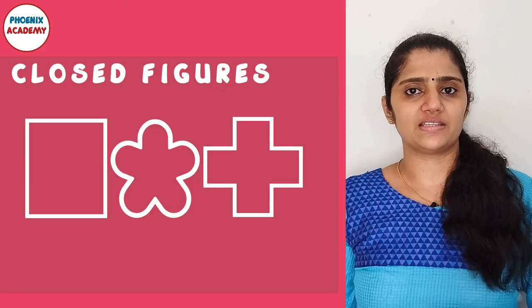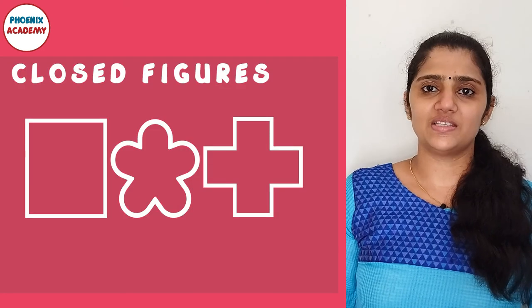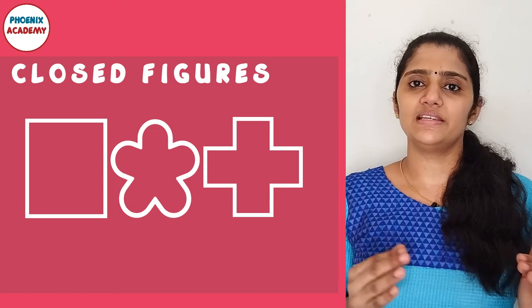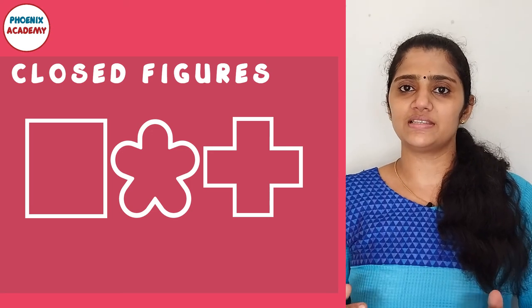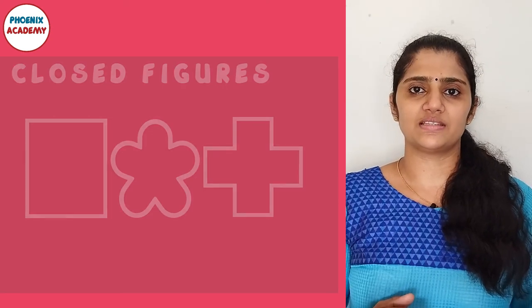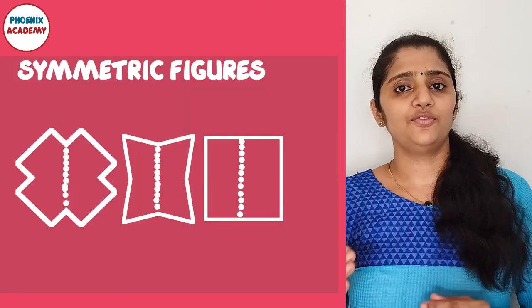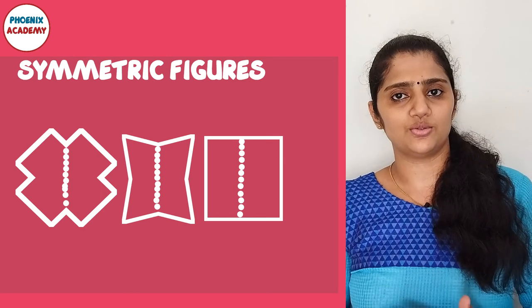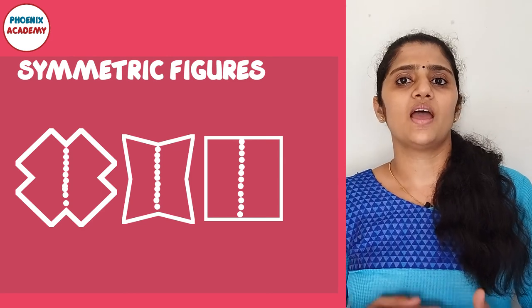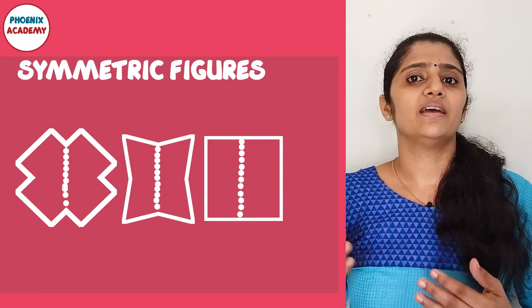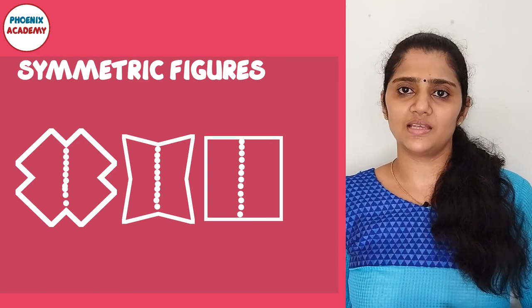Look at these figures. All these figures are closed. These kinds of figures are called closed figures. If you can fold an object into two halves and each half matches the other, it is symmetrical.